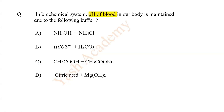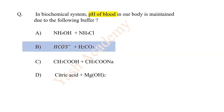In biochemical systems, the pH of blood in our body is maintained due to the following buffer — the answer is B: HCO3⁻ plus H2CO3.